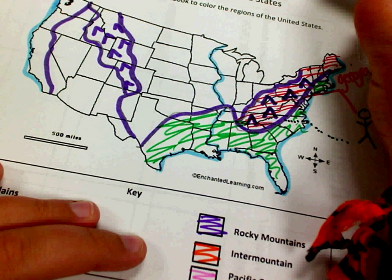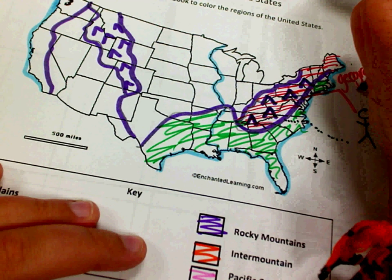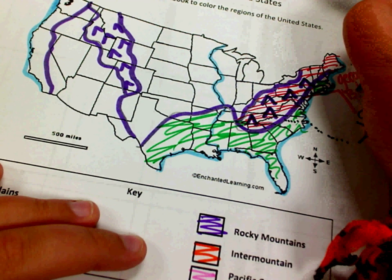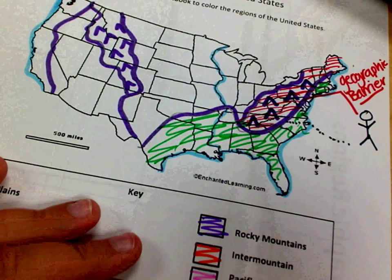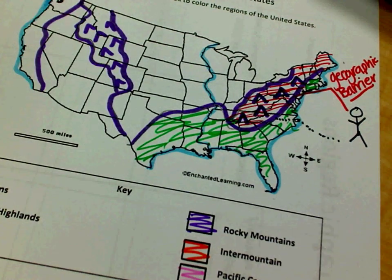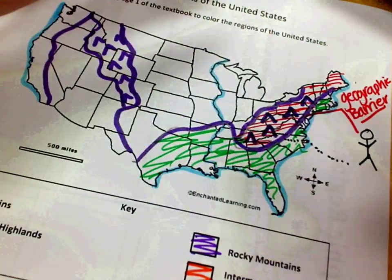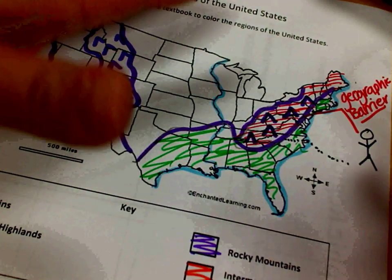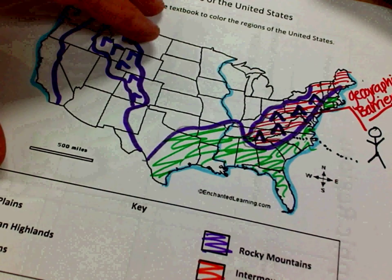So: geographic barrier — first geographic barrier for early colonists. And guys, remember, this is also just FYI where Katniss Everdeen is from. You're welcome, world.